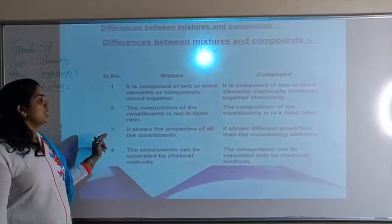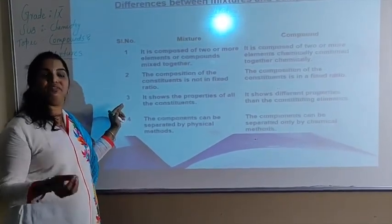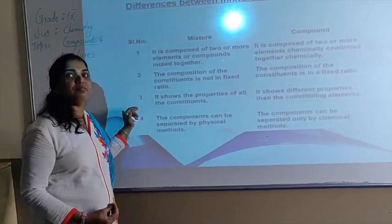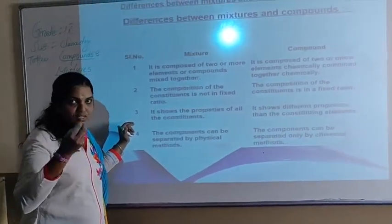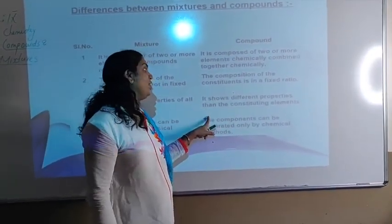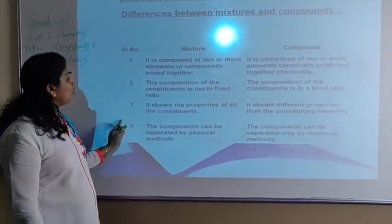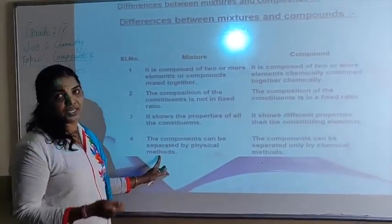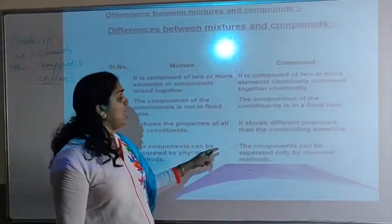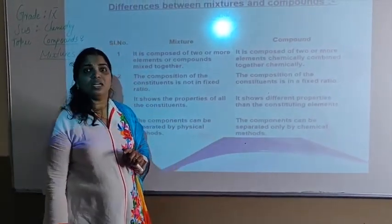In the case of a compound, there must be a particular chemical composition. A mixture shows the properties of all its constituents — sulfur shows its property and iron filings show their property. But after the formation of iron sulfide, it loses all properties of its constituent elements and shows entirely different properties. The components of a mixture can be separated by physical methods such as magnetic separation or filtration, whereas components of a compound can only be separated by chemical methods.